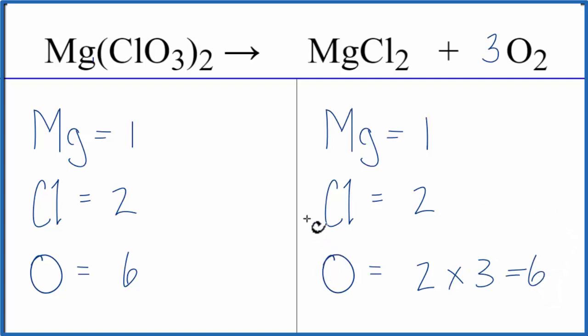Where people often have problems on an equation like this is they don't realize this two applies to everything in the parentheses, so you have two times the one chlorine, that gives you two of those, two times the three oxygens, that gives you six of those.